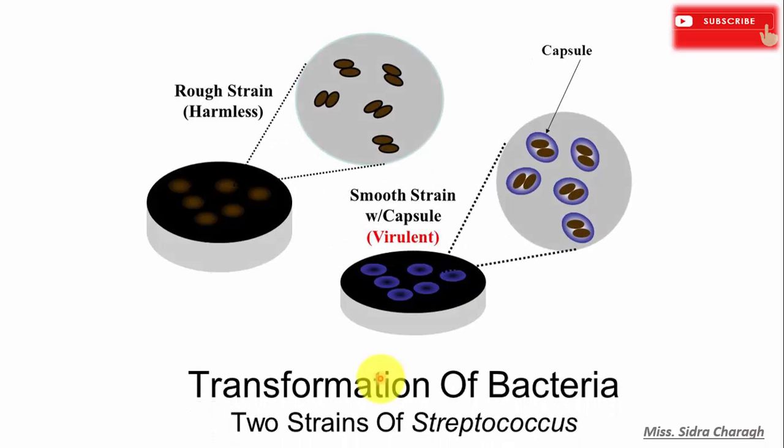Streptococcus pneumoniae has two types of strains: S strain (smooth strain) and R strain (rough strain). Cells of smooth strain have a protective layer called polysaccharide coat or capsule which protects the cells against the immune system and makes the smooth strain highly pathogenic.